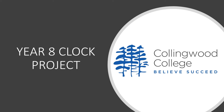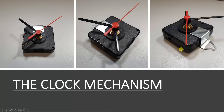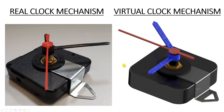Welcome to video 5 for the clock project, and this is the big one where we're going to put everything together into one assembly. By now you should have made all of these components that make up the clock individually using Autodesk Inventor, and today we're going to learn how to put them all together like my one on the right to create your virtual clock mechanism that's all in the right place and all joined together.